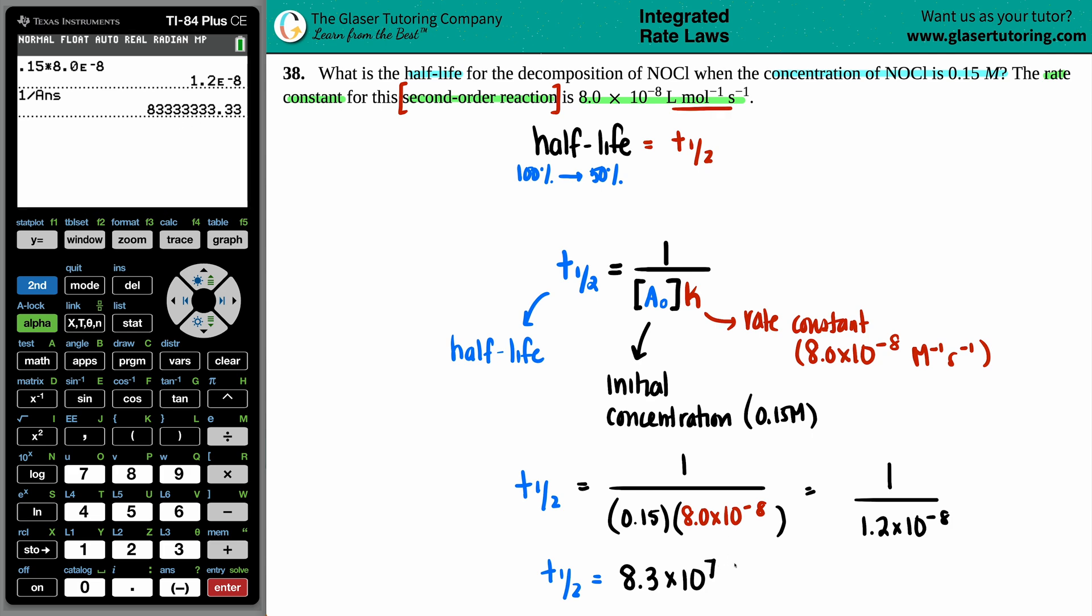But now the question is, what time unit is this? Is it 8.3 times 10 to the seventh seconds, minutes, hours? Always check to see what the unit of the rate constant is doing. Look for that time unit in the rate constant. The time unit in the rate constant is S, which stands for seconds. So whatever they gave you in the rate constant, that's the time that's going on here. So this is a lot of seconds. 8.3 times 10 to the seventh seconds, and that is the half-life.